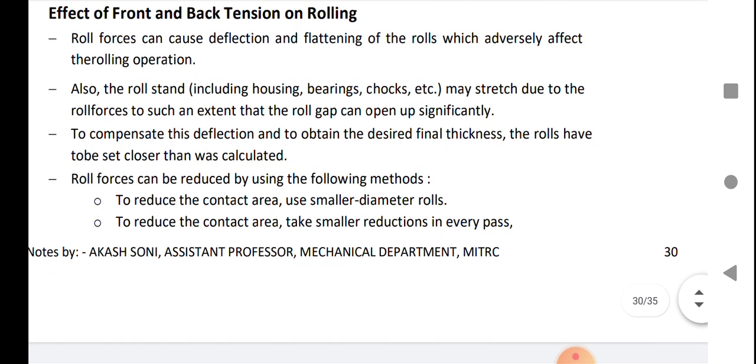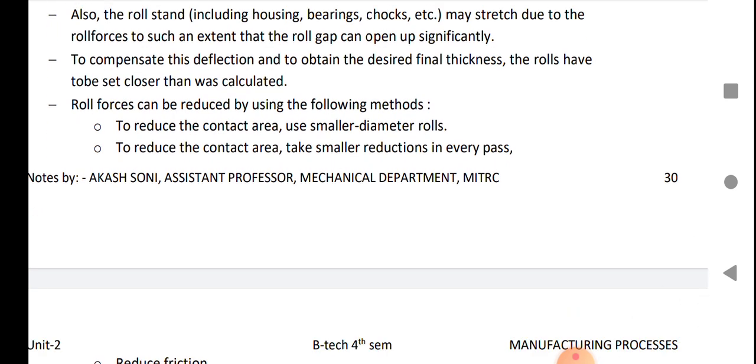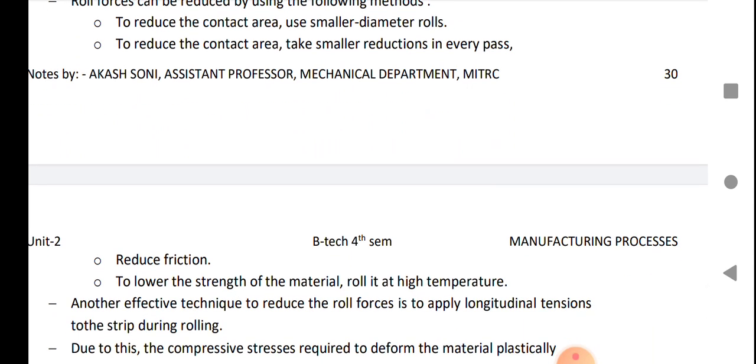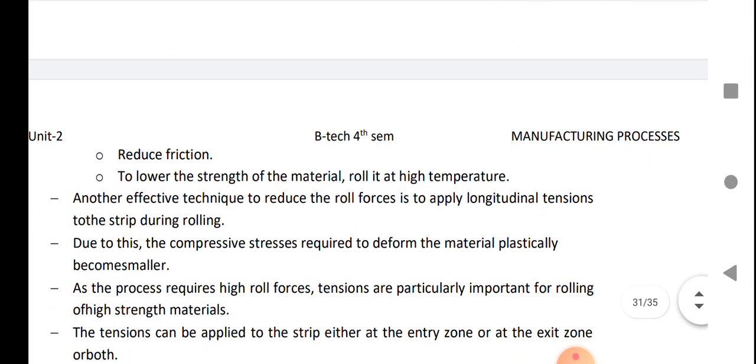Effect of front and back tension on rolling: Rolling force can cause deflection and flattening of the rolls which adversely affect the rolling operation. Also, the roll stand including housing, bearings, chalks, etc. may stretch due to the roll force to such an extent that the roll gap can open up significantly. To compensate this deflection and to obtain the desired final thickness, the rolls have to be set closer than that calculated. Roll force can be reduced by using the following methods: To reduce the contact area, use small diameter of the roll. To reduce the contact area, take small reduction in every pass. Reduce friction.